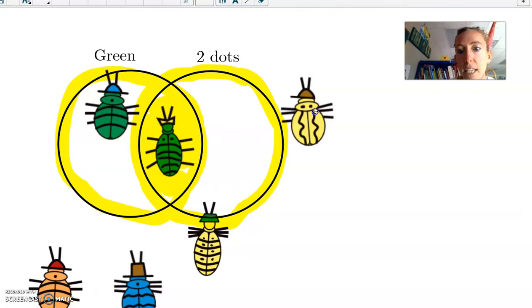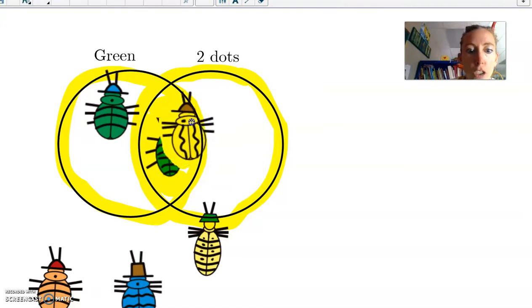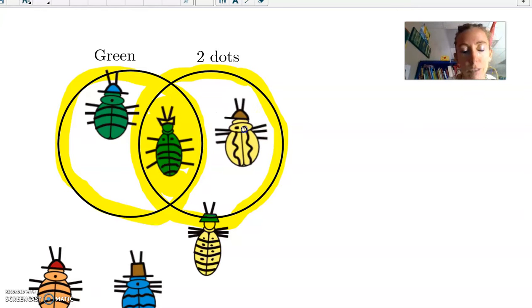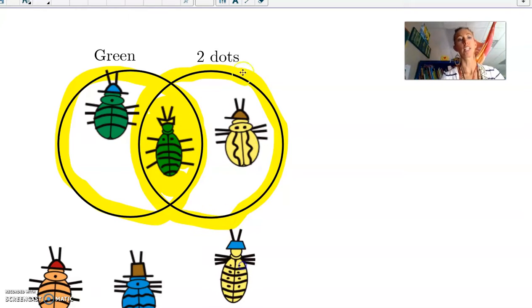So would I take this guy, the two-dotter, and also put him in the middle? No, because it's not green, right? It's yellow. So it stays here. So the Venn diagram would be sorted like this.